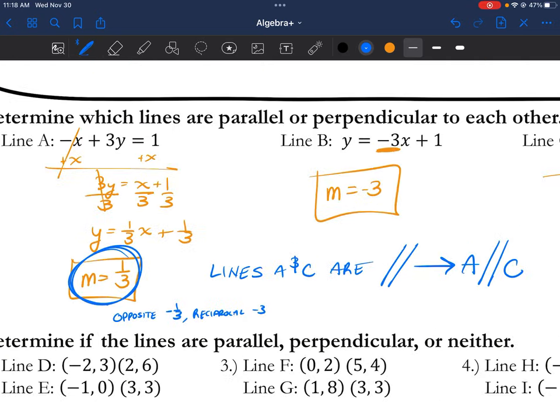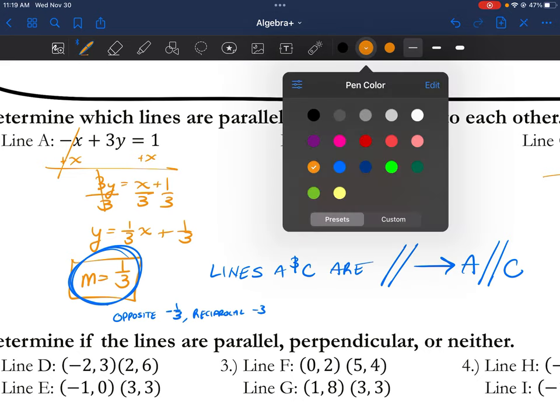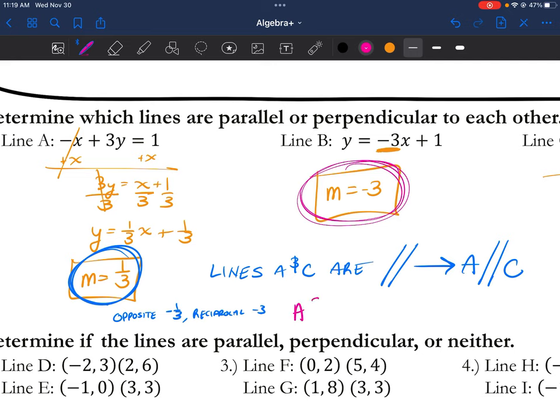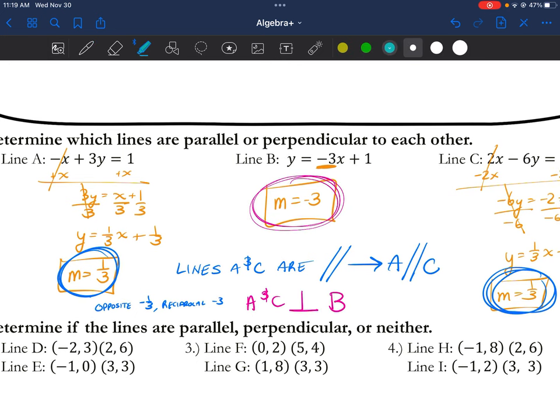Hey, this one was a negative 3. So that means a and c are perpendicular to b. So these answers would be my final answers. Parallel and then perpendicular.